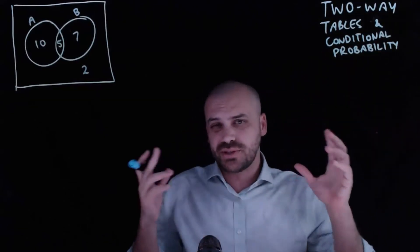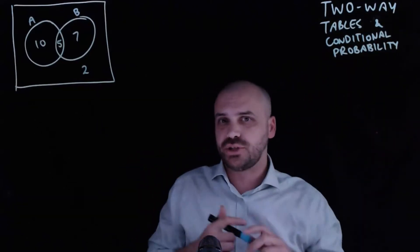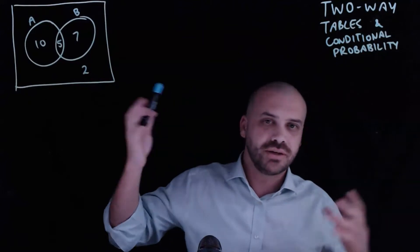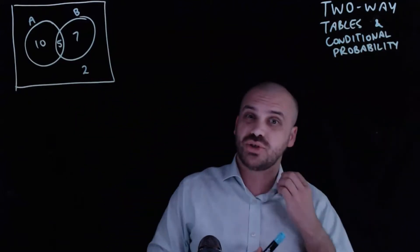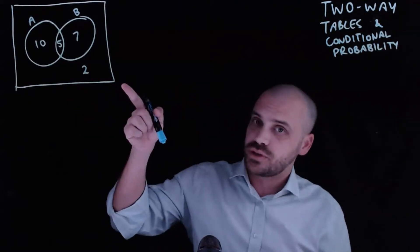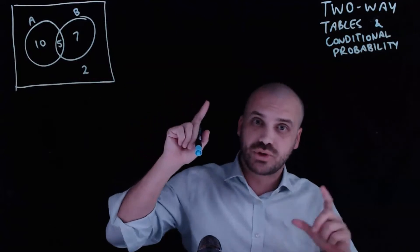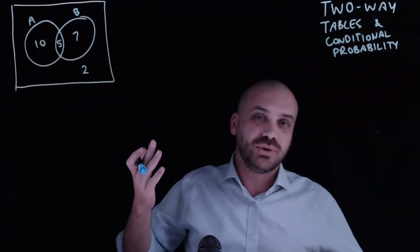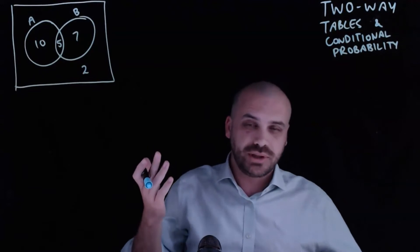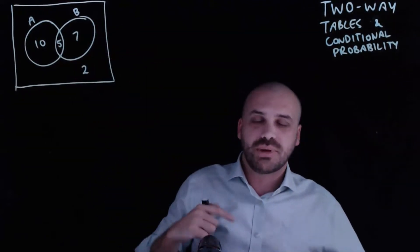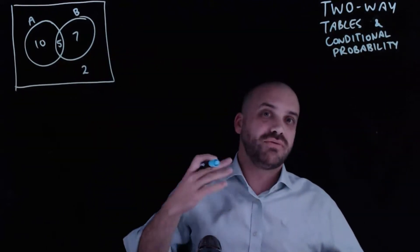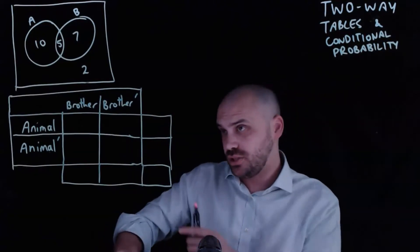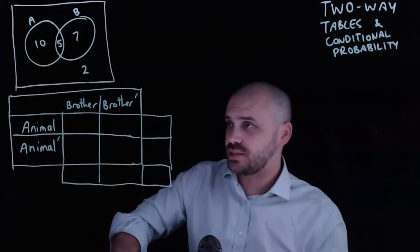We're looking at two-way tables, but this time we're going to talk about conditional probability. You might be looking at the Venn diagram and wondering what it's doing there — we're supposed to be talking about two-way tables. But we can convert that Venn diagram to a two-way table. A is going to be people who have a pet in their house, and B is going to be people who have a brother. Now we're going to represent that same information in this two-way table.